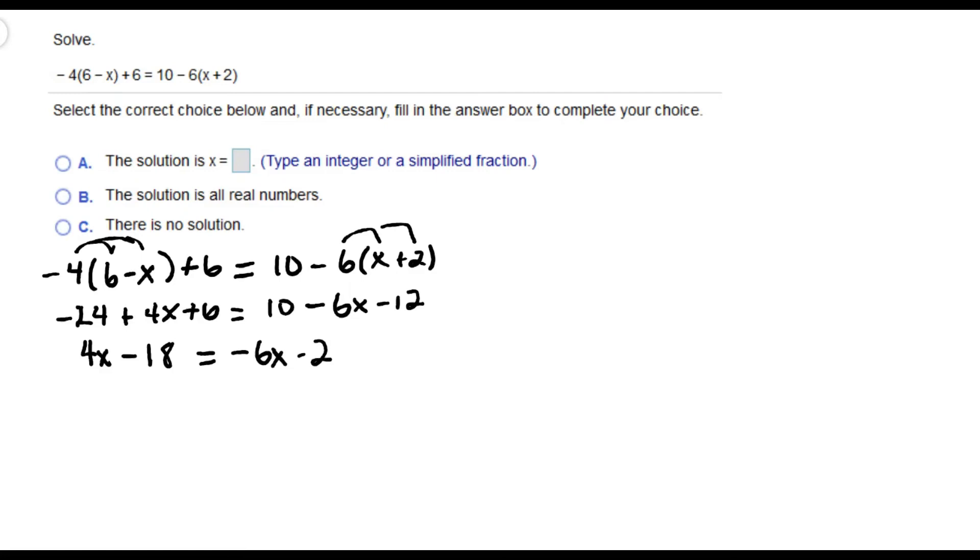Once I've made each side as simple as possible, I want to get all the x's to the same side. I would add 6x onto both sides. That would give me 10x minus 18 equals negative 2.